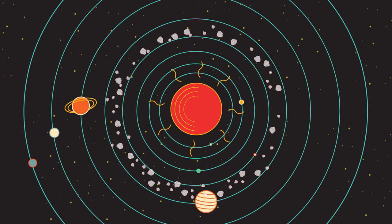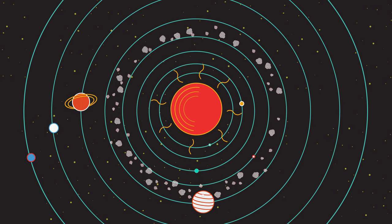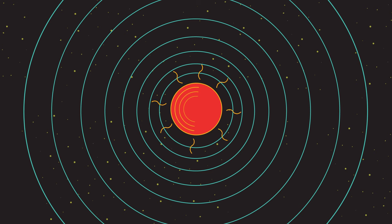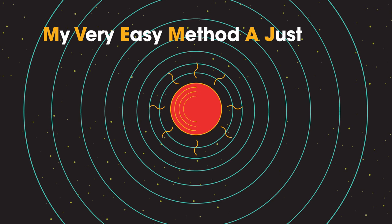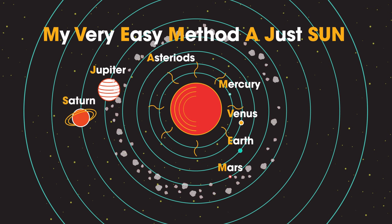Remembering their names in the right order can be tricky so often we use a silly verse to help. One example is my very easy method a just Sun. Mercury, Venus, Earth, Mars, asteroids, Jupiter, Saturn, Uranus and Neptune.